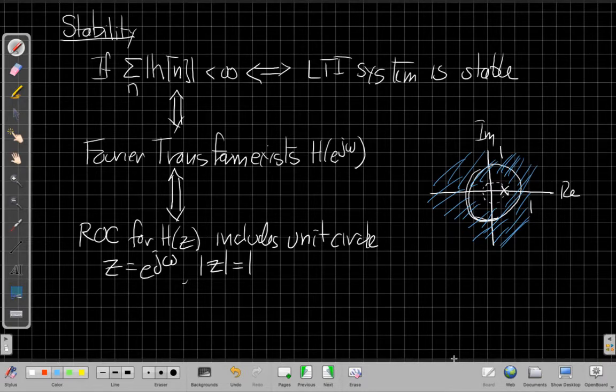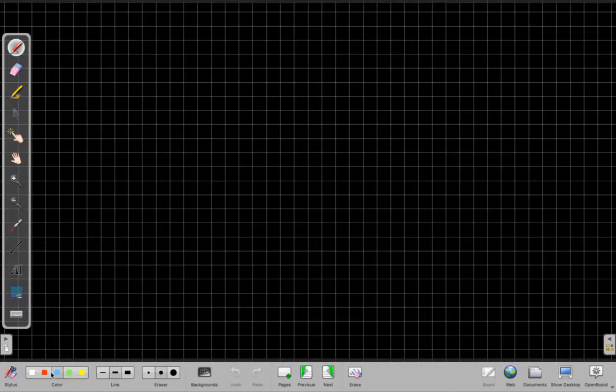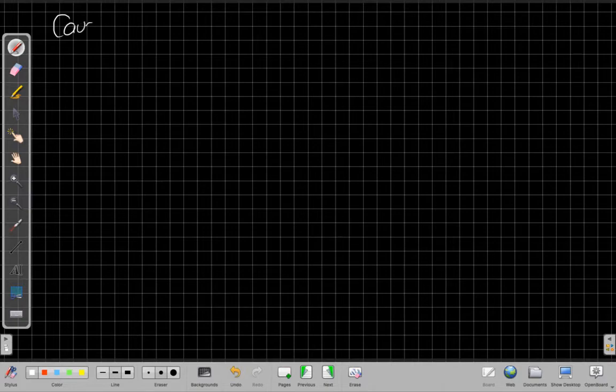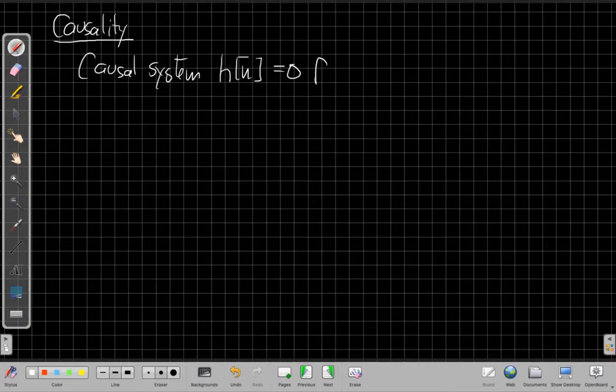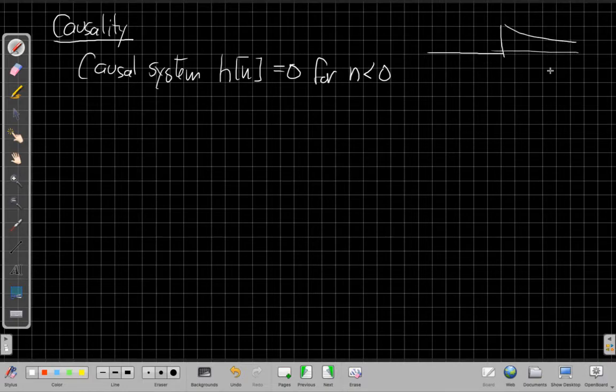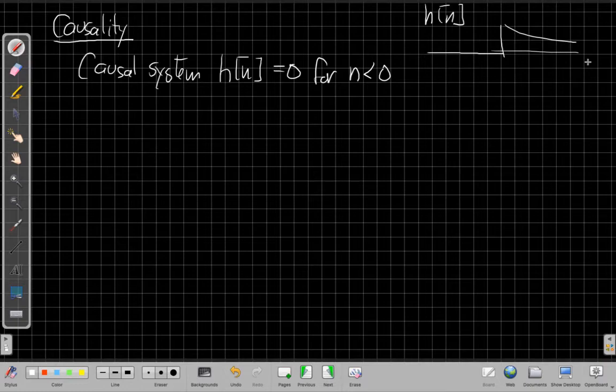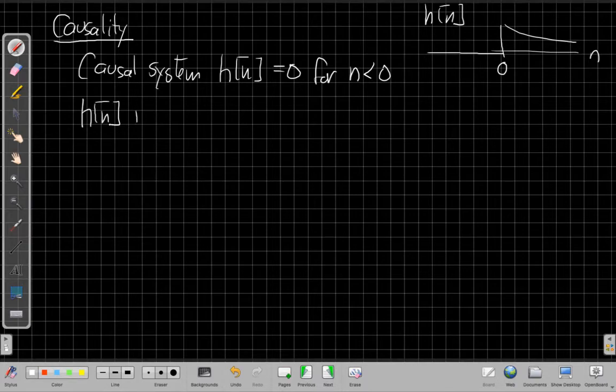So that's the short and sweet story about stability. Let's go on and talk about causality and how it connects to the region of convergence. Well, first we know that for a causal system, we have H of N is equal to zero for negative time, for N less than zero. But if I have an H of N that looks like that, maybe it's something that dies away sort of drawing it in cartoon form like this. If I have an H of N that looks like that, I would also say that's a right-sided sequence, based on our discussion from last time.